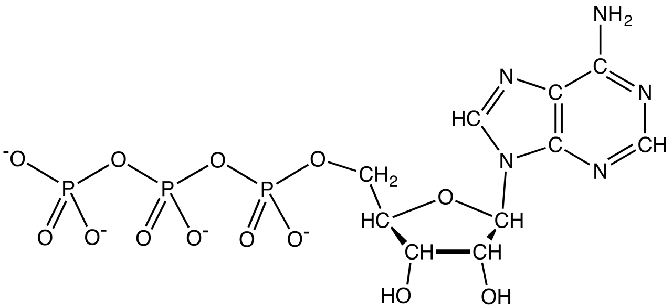In oxidative phosphorylation, the passage of electrons from NADH and FADH2 through the electron transport chain pumps protons out of the mitochondrial matrix and into the intermembrane space.